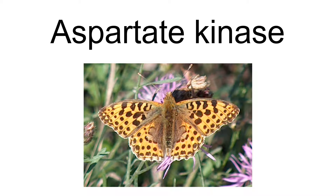Aspartokinases are present only in microorganisms and plants, but not in animals, which must obtain aspartate family amino acids from their diet. Consequently, methionine, lysine, and threonine are essential amino acids in animals.